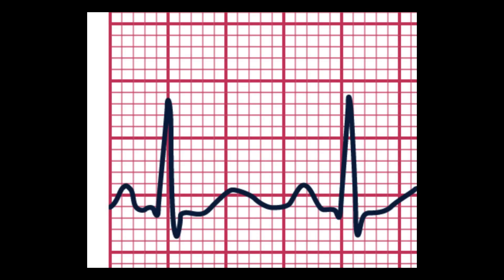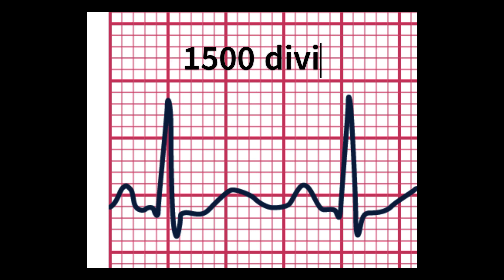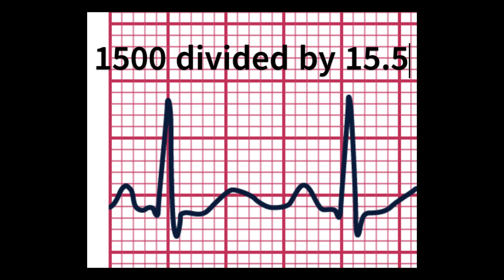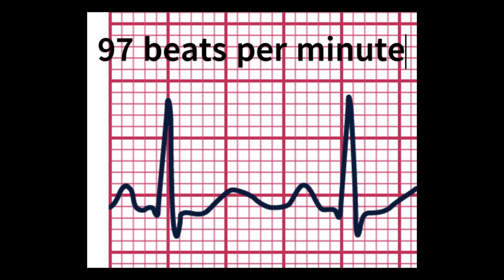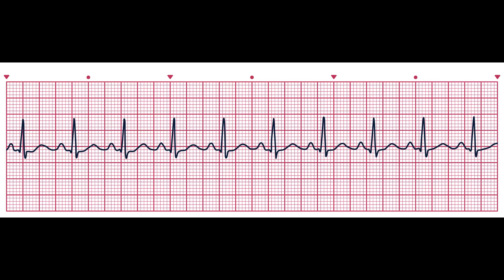We mark two successive QRS complexes as shown with arrows, then count the number of small boxes between them. To calculate the heart rate, we divide 1500 by the total number of small boxes between the two QRS complexes. In this example, 1500 divided by 15.5 gives a heart rate of approximately 96.8, rounded up to 97 beats per minute — close to the 100 BPM from the 300 method. Just like the 300 method, the 1500 method can only be used on regular rhythms.